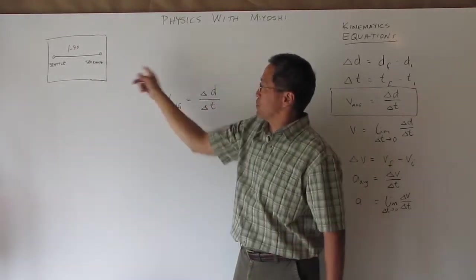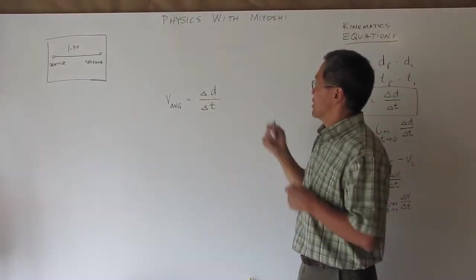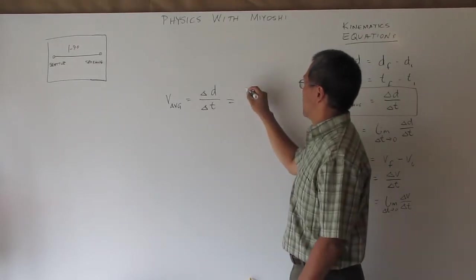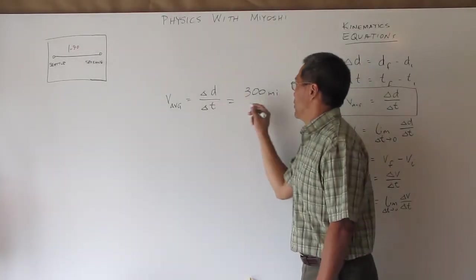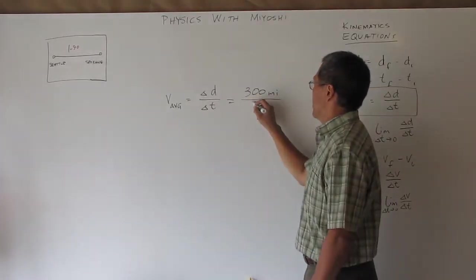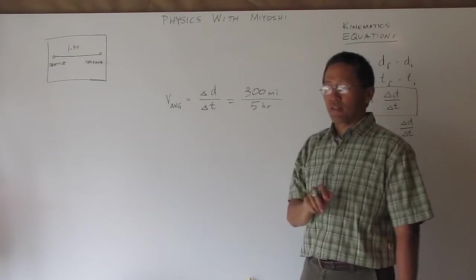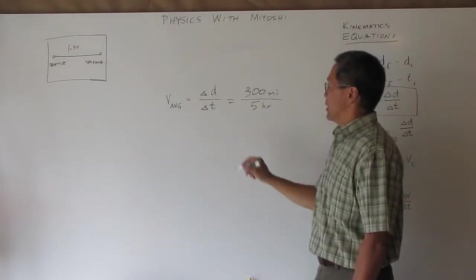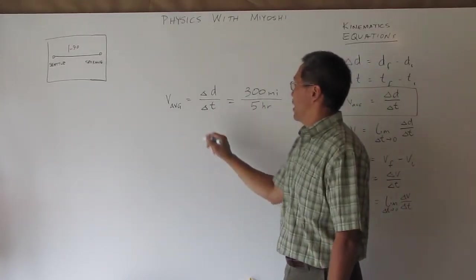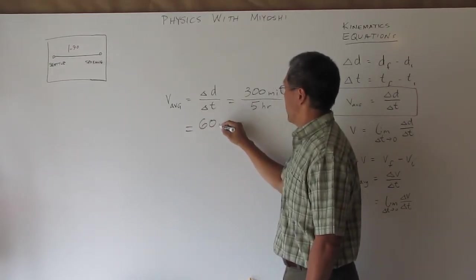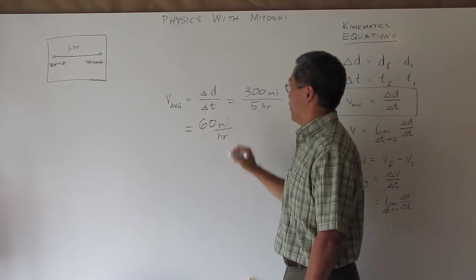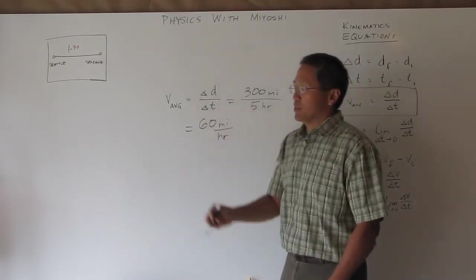If I want to go from Seattle to Spokane and I know that my distance there is approximately 300 miles and I know that it's going to take me approximately five hours to go there then I can figure out my average speed of 300 divided by 5 is going to give me exactly 60 miles per hour. That would be my average speed.